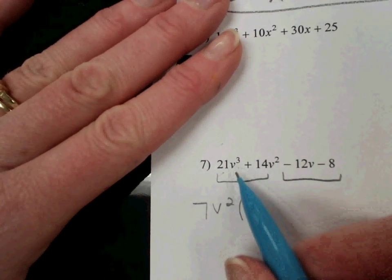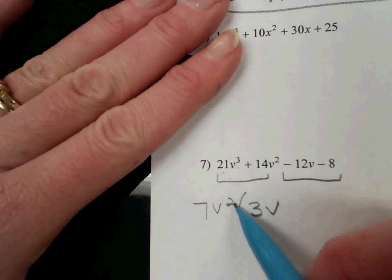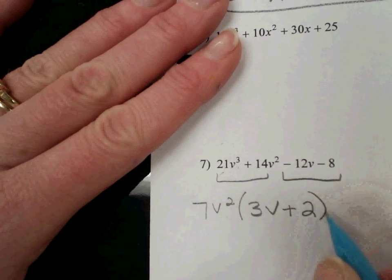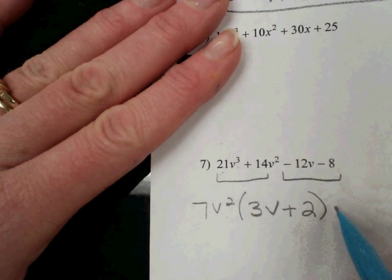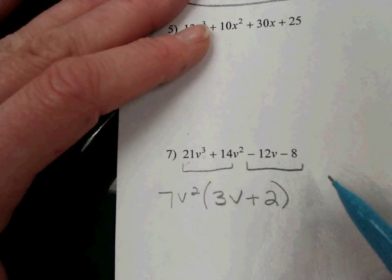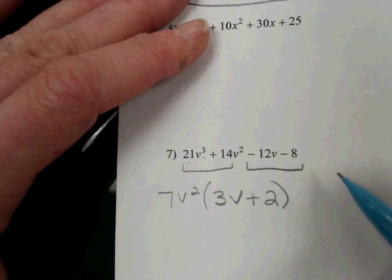And then when we divide, 21 divided by 7 is 3, and v³ divided by v² is v, remembering we subtract the exponents when we're dividing. So 3v plus 2, because the v² would cancel. Now when we look at the second group, it's minus 12v and minus 8. What's the GCF of those two?